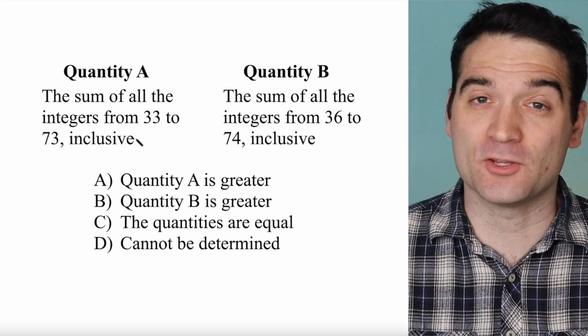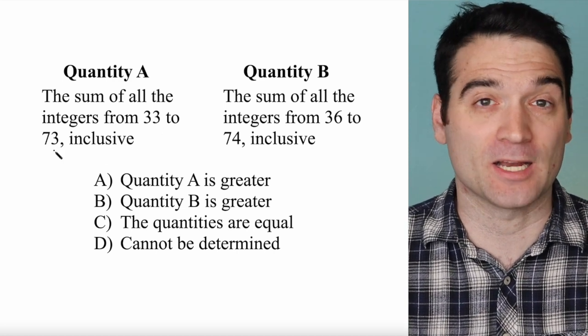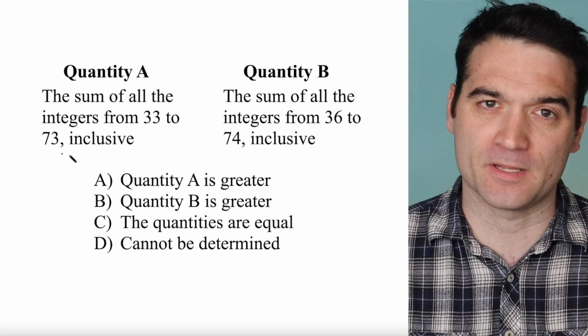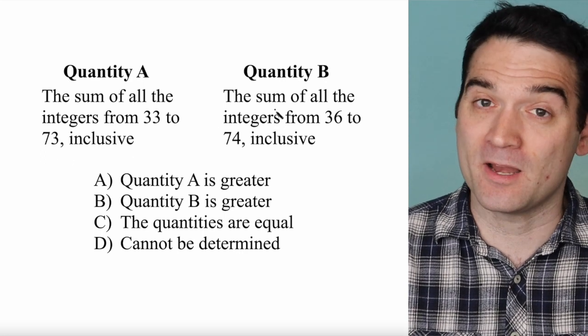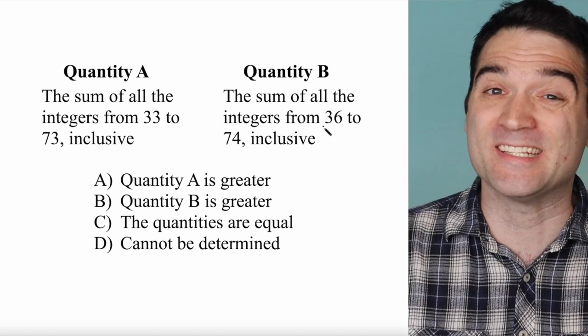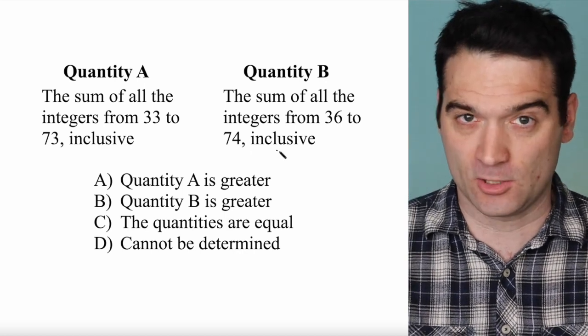Quantity A is the sum of all the integers from 33 to 73 inclusive, meaning including 33 and 73. And Quantity B is the sum of all the integers from 36 to 74 inclusive.